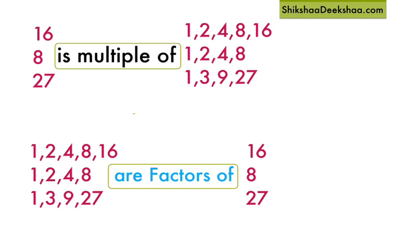Here in this example you can see 16 is a multiple of 1 and 16 itself. 8 is a multiple of 1 and 8 itself. 27 is a multiple of 1 and 27 itself. So we can say that every number is a multiple of 1 and itself.